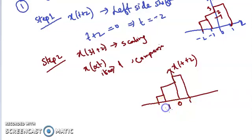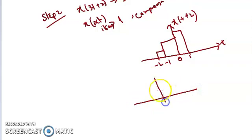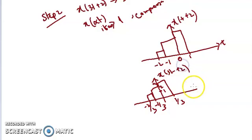The time indices 0, 1, −1, −2 of X(T+2) will be divided by 3. So dividing by 3 gives 1/3, −1/3, and −2/3. The plot shape remains the same, only the time axis is compressed. The magnitude values 2 and 3 do not change. This gives us X(3T+2).